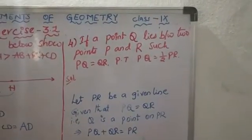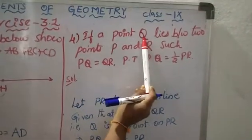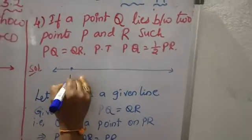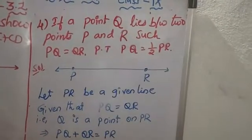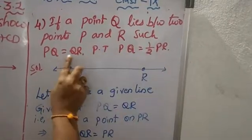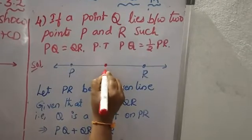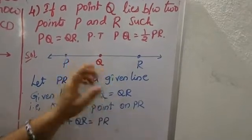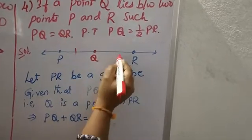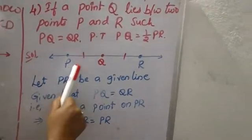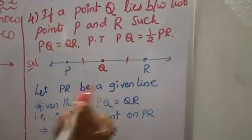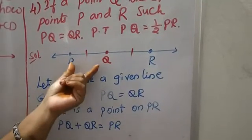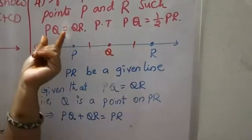Fourth question: if point Q lies between two points P and R, such that PQ equals QR, prove the result. Drawing a straight line with points P and R, Q lies between them dividing PR into two equal parts — PQ equals QR. Let PR be the given line and PQ equals QR, so Q is the point on PR. The length of PQ always equals the length of QR according to the question.